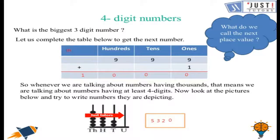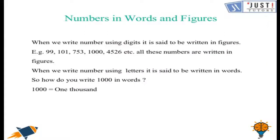Let us move on to the next page. And let us learn how to write numbers in words and figures. So when we write numbers using digits, it is said to be written in figures. For example, we can take any number like 99 or 101. All these numbers are written in figures. But when we write a number using letters, it is said to be written in words.